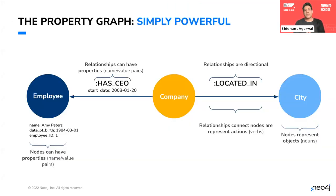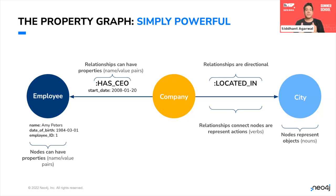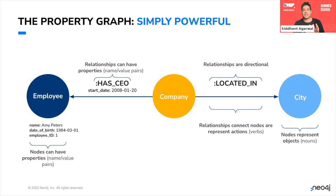The true power of the property graph model is that it's a natural, human-way approach to data. The Neo4j graph model allows you to model data in a way that everyone can understand, making data more useful without cognitive dissonance. There's no need to translate data into rows or columns as in relational databases. Instead, the graph model is intuitive and easy to digest, making it easier to communicate across business functions. It allows for more exploration of data and understanding context — expanding curiosity and identifying new insights. The graph model maps the real world as-is, just like what you draw on a whiteboard, and is completely flexible.